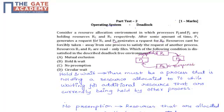Resource cannot be forcibly taken away from one process to satisfy the request of another process. Resources R1 and R2 are read-only files — that is, these are shareable files.